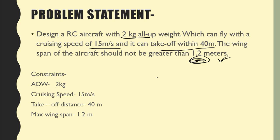That is the 2 kg all-up weight, cruising speed 15 meters per second, and takeoff distance of 40 meters. What I need to do is I need to plot three curves, or two curves, in my constraint diagram - first for the cruising speed and second one for the takeoff distance.